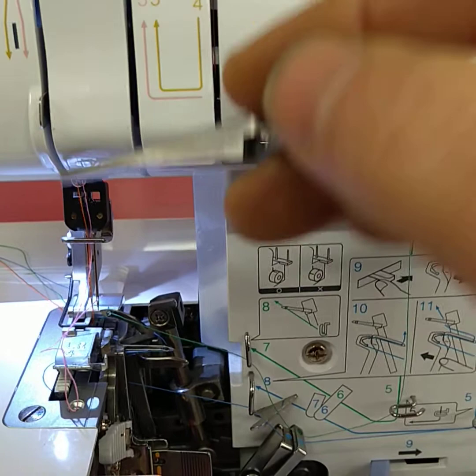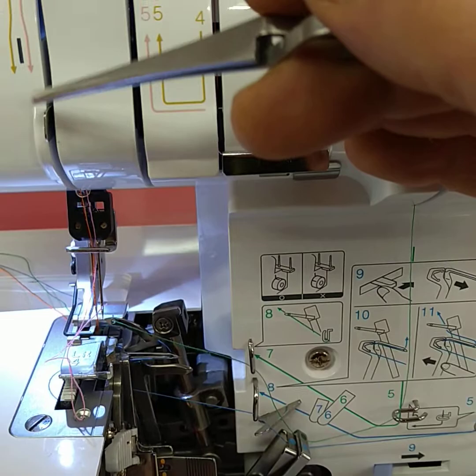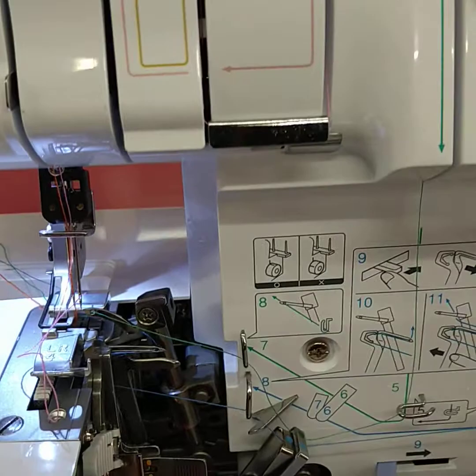It's important that they don't tangle as they go down or wrap around each other. Orange on the left and then the pink on the right, we come down.